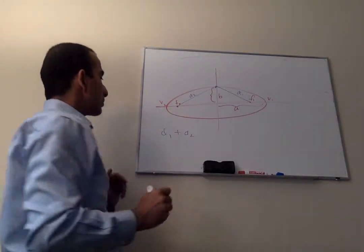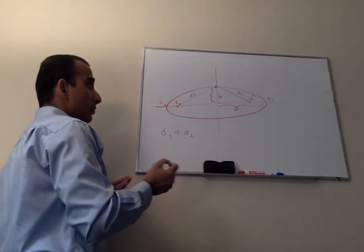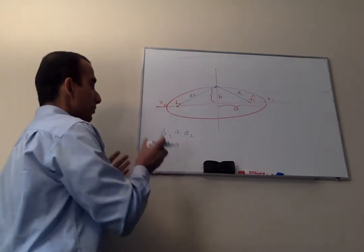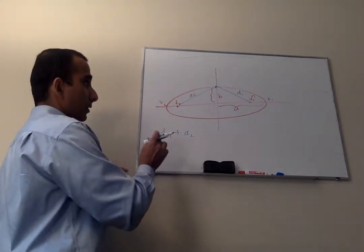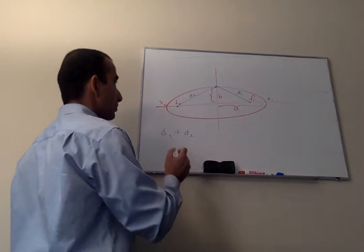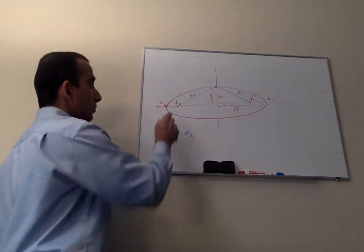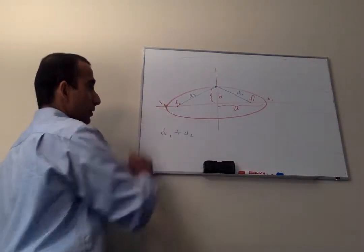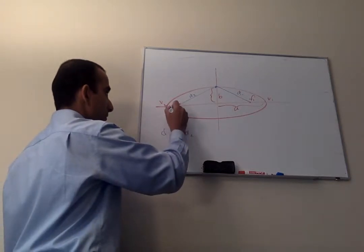So if D1 plus D2 is constant, we should be able to get the same distance from the foci on any point in the ellipse. So let's, for instance, now take vertex 2. The distance from foci 2 to vertex 2, let's call that D3.